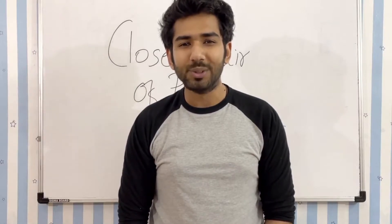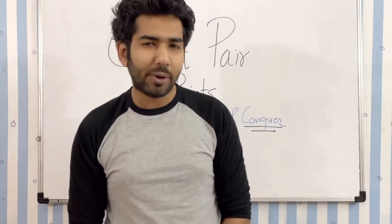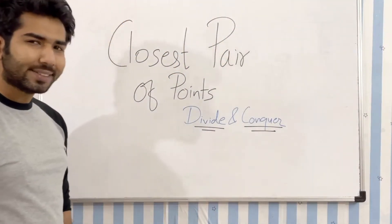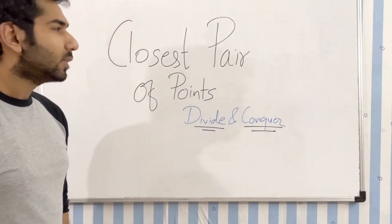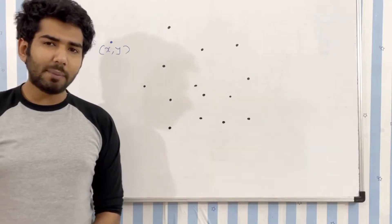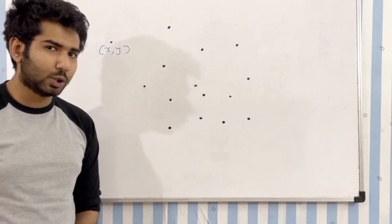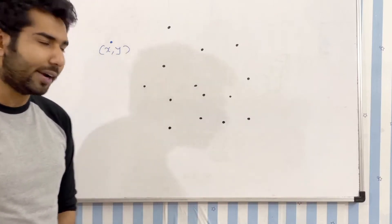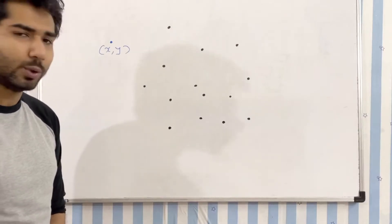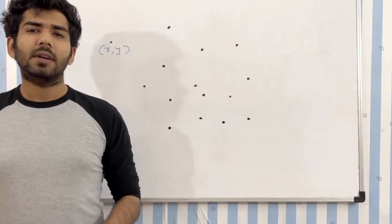Hello everyone, welcome to TIC, this is Khushal. Today we will be looking at the very famous problem 'Closest Pair of Points' using divide and conquer. Let's understand the question: you will be given n number of points on a 2D plane, and your job is to find the two points which are at the closest distance from each other — that means the distance between those two points will be the lowest.